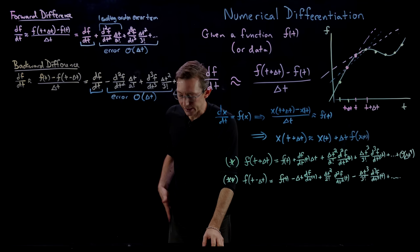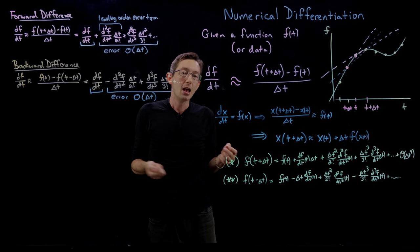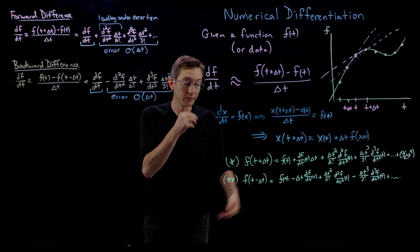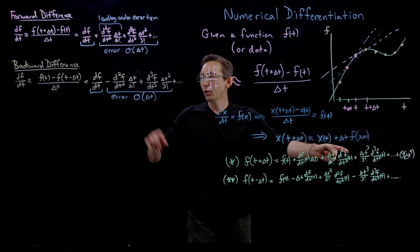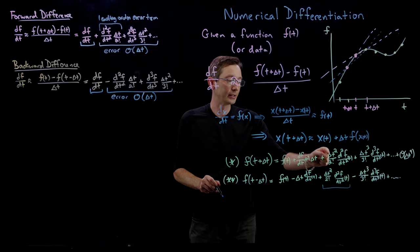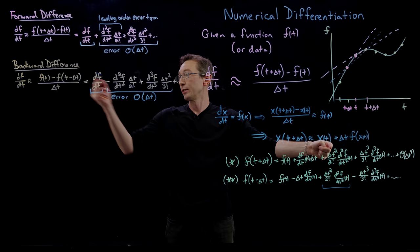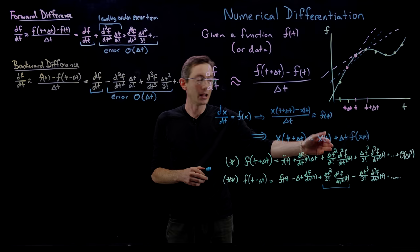You might ask: are all finite difference derivatives order delta t? Can we do better? You might think: all my error is coming from this delta t squared times the second derivative term — the curvature of f. What if I could develop a scheme that cancels those terms and pushes my error to the next delta t cubed term? That would be a better scheme, and that is called a central difference.